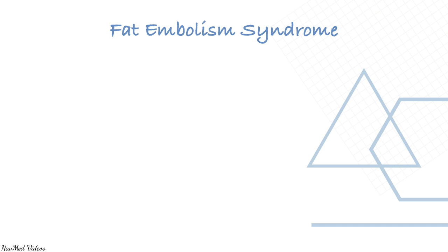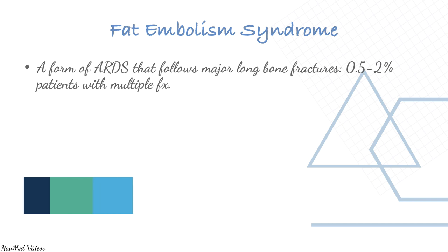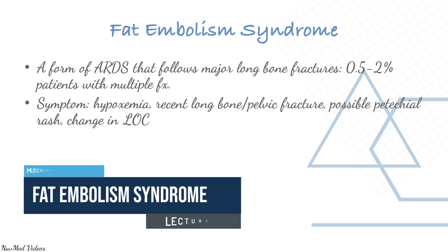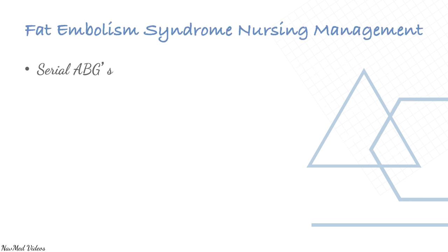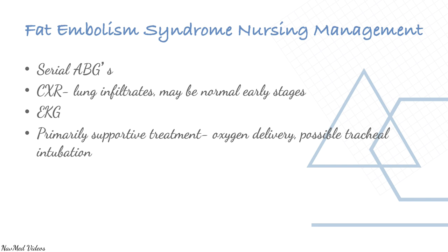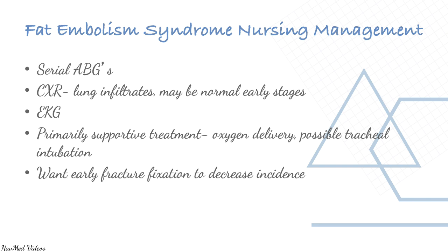Fat embolism syndrome is a form of ARDS that follows major long bone fractures. Symptoms include hypoxemia, recent long bone or pelvic fractures, possible petechial rashes, and change in or loss of consciousness. Embolic marrow fat macro-globules damage small vessel perfusion, leading to endothelial damage in pulmonary capillary vessels and respiratory failure. Management requires serial ABGs, chest X-ray, ECG, and primary supportive treatment. Early fracture fixation is key to decreasing incidence.